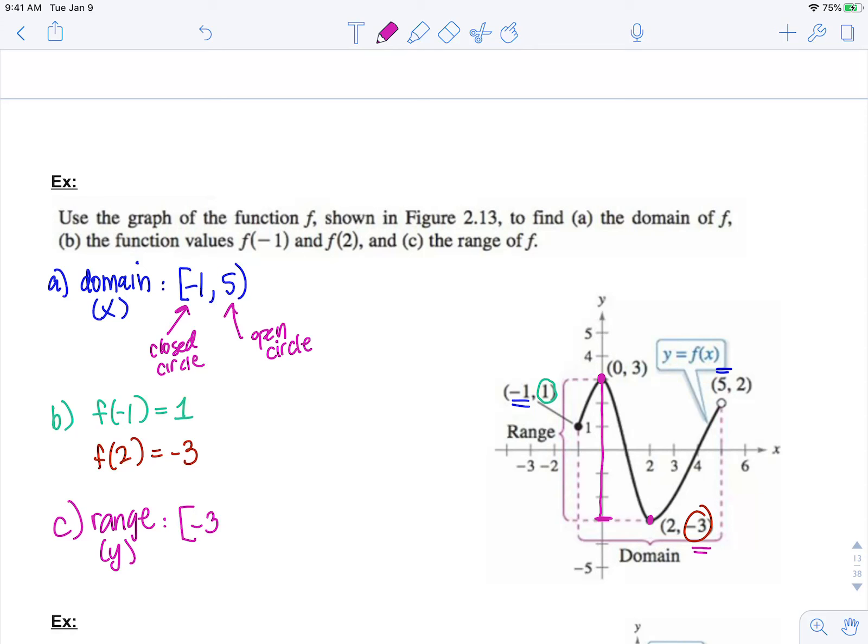All right, lowest y value. All the way up to my highest y value, positive 3. And that's, we use brackets because it is closed circles on those values.